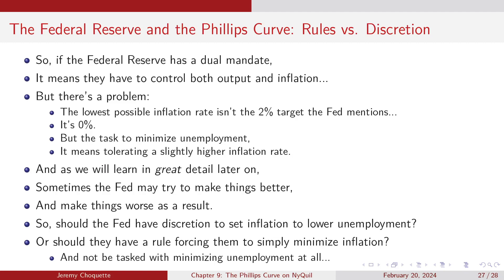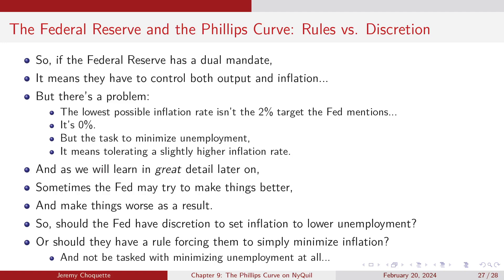0% inflation is great when the economy is doing well — that works. But when we go into a recession, there are welfare gains should the central bank be allowed to step in and exercise discretion, perhaps increasing inflation to lower unemployment and lessen the sting of recession. So sometimes the Fed might try to make things better and as a result make things worse — the tension between rules and discretion.